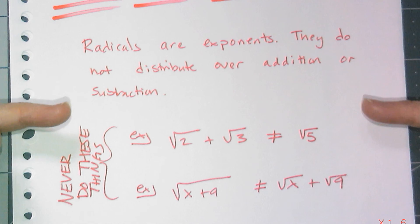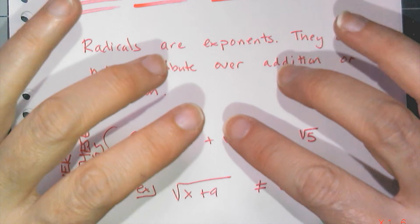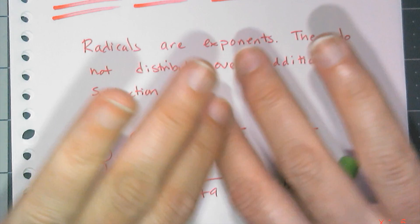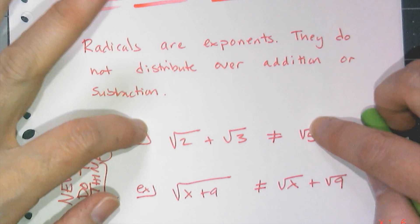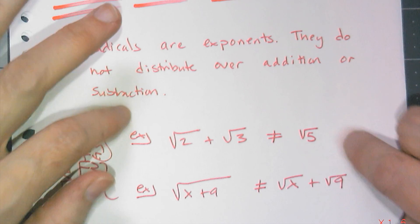These are two things you can never do with exponents or radicals. They do not distribute over addition and subtraction, so you can't sprinkle exponents, you can't sprinkle radicals, you can't separate them out. These are not things that you are allowed to do, so don't do them.